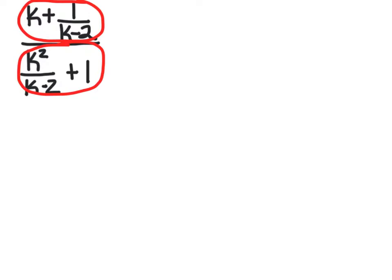Whenever we're doing the complex fractions, we have to think about restrictions the whole way through — we can't divide by 0. Looking at the original problem, I can't have a 0 in any denominator, and the entire outer denominator can't be 0. So I already know k can't be 2. I'll set the rest equal to 0 after I've simplified.